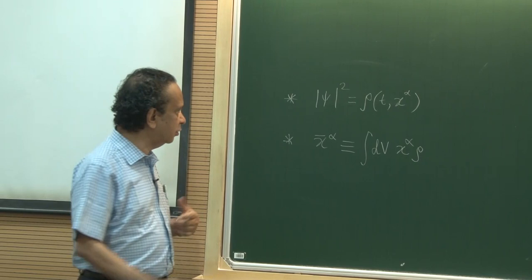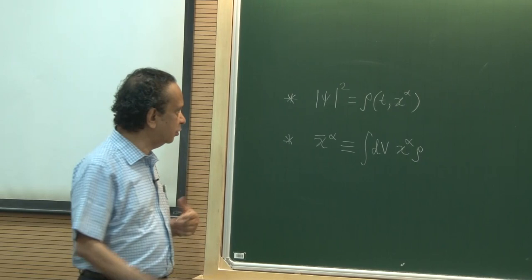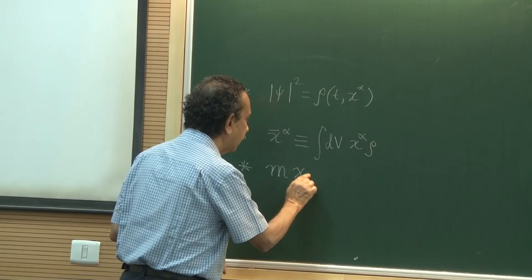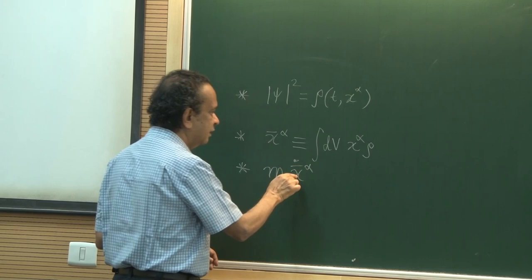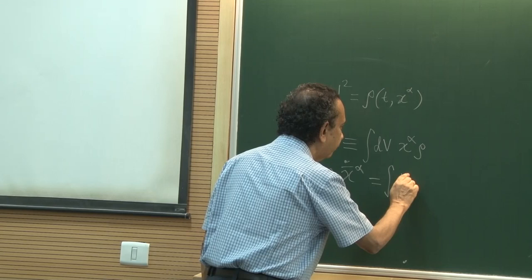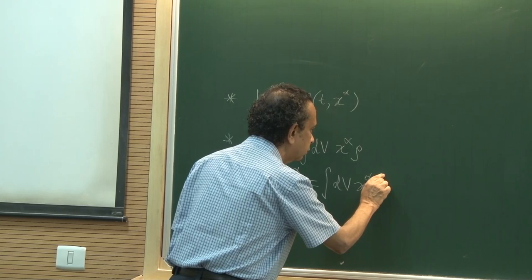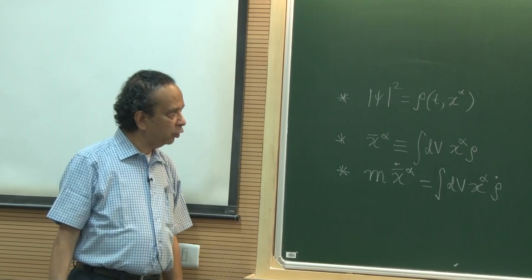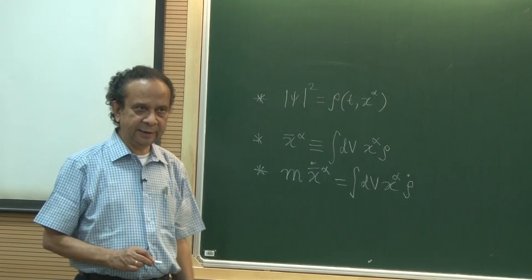Once we have the average trajectory we can define the average momentum as m times ẋ̄^α — mass times average velocity gives average momentum. So the mean momentum equals ∫ dV · x^α · ρ̇. To evaluate this I need an equation for ρ̇, which I am going to derive next starting from the Schrödinger equation.